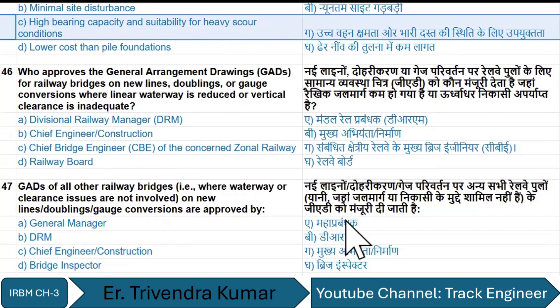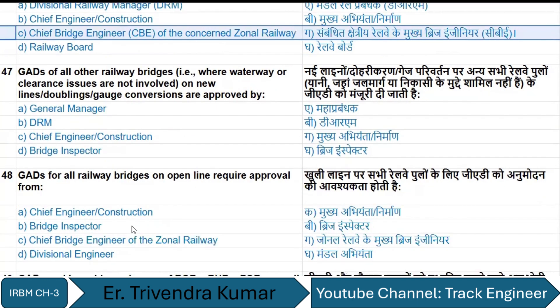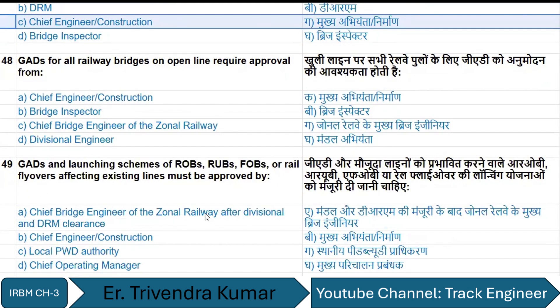For railway bridges on new lines, doubling or gauge conversion where linear waterway is reduced or vertical clearance is inadequate, the GAD is approved by the CBE of the concerned zonal railway. For all other railway bridges where waterway or clearance is not involved on new lines, doubling or gauge conversion, the GAD is approved by the Chief Engineer (Construction). GAD for all railway bridges on open lines requires approval from the Chief Bridge Engineer of the zonal railway.